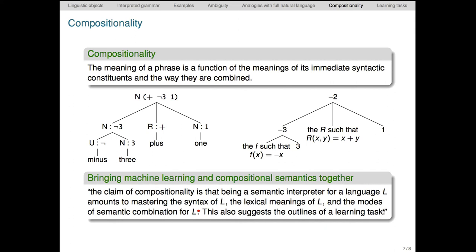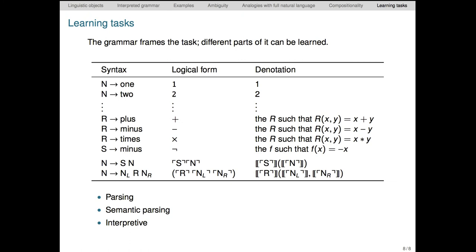And the quotation continues, this also suggests the outlines of a learning task. That is, how do people learn to be compositional interpreters? Or perhaps more to the point, given our goals for this course, what would it take for an artificial agent or system to learn to be a compositional interpreter, so that it too could be creative with language.